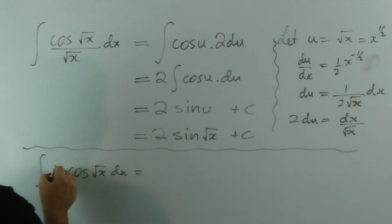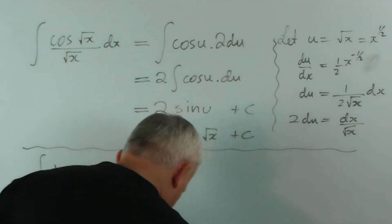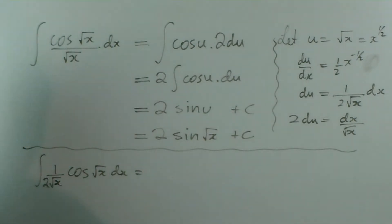And have you recognised that 1 over the square root of x with a 2 in the front, I'll try and write that more distinctly, had you recognised that that was the derivative of root x, you would have, I hope, made this adjustment to your integral.